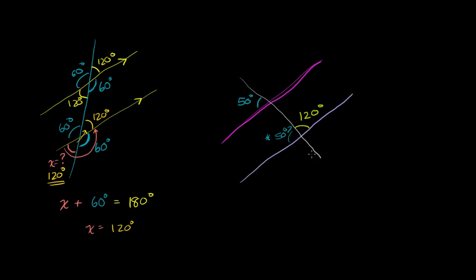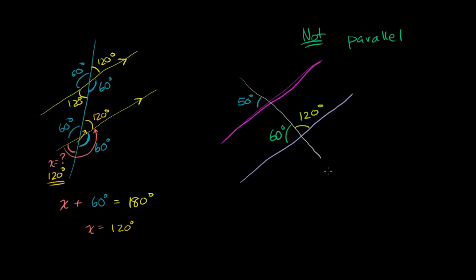Another way to think about it: if this is 120 degrees, this angle right here has to be supplementary to that — it has to add up to 180. So this angle right here has to be 60 degrees. Now this angle corresponds to that angle, but they're not equal — 60 degrees versus 50 degrees. The corresponding angles are not equal, so these lines are not parallel.